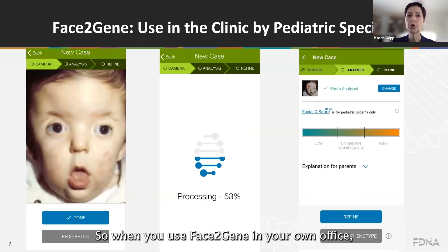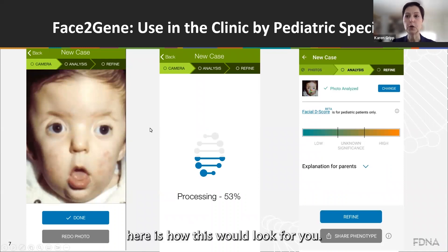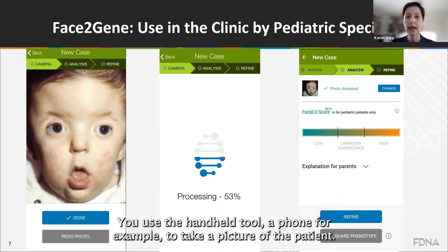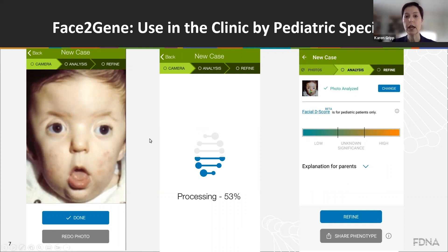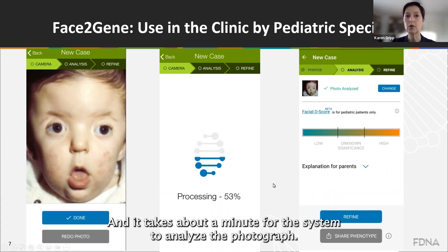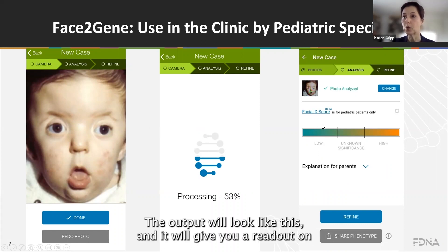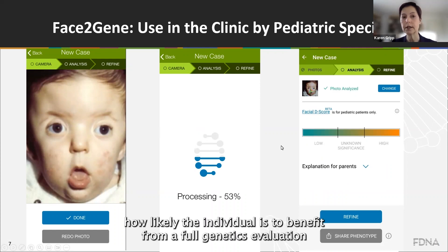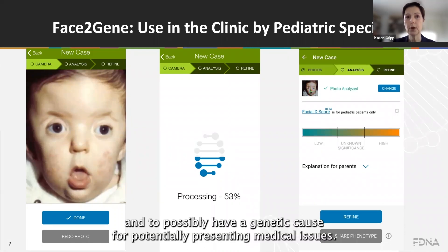When you use Face2Gene in your own office, here is how this would look for you. You use the handheld tool — a phone, for example — to take a picture of the patient, and it takes about a minute for the system to analyze the photograph. The output will give you a readout on how likely the individual is to benefit from a full genetics evaluation and to possibly have a genetic cause for potential presenting medical issues.